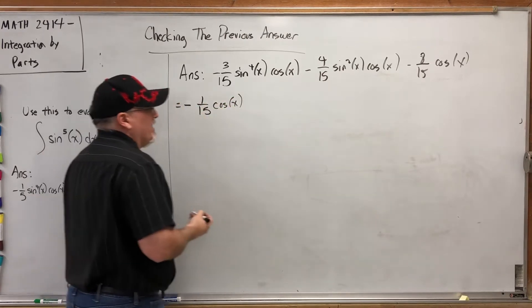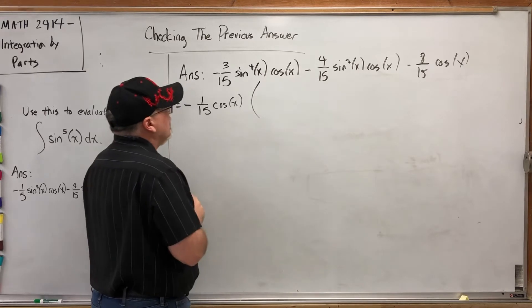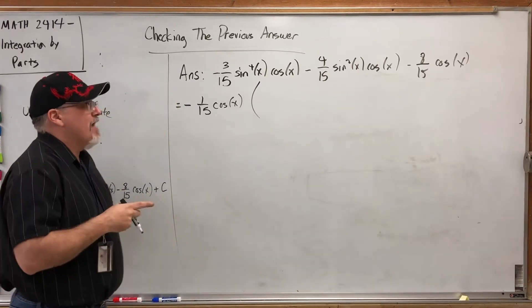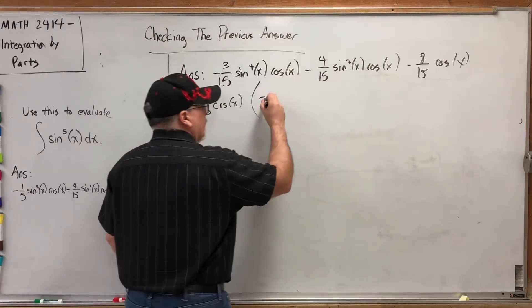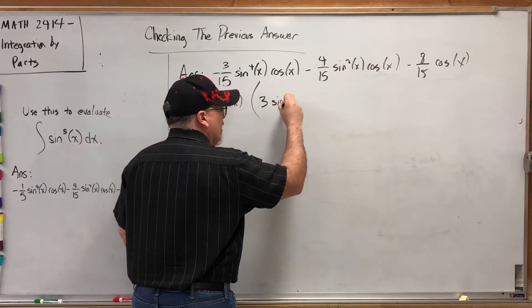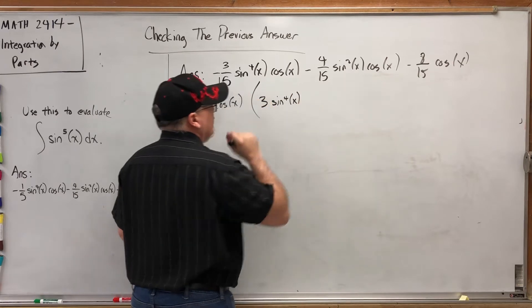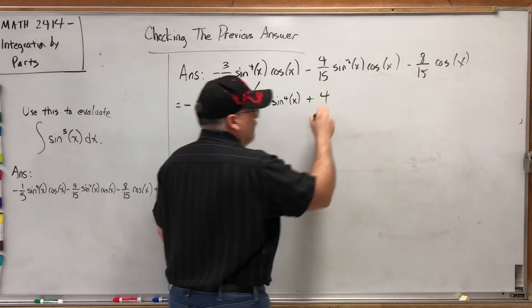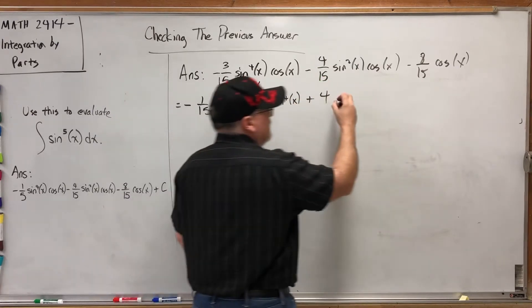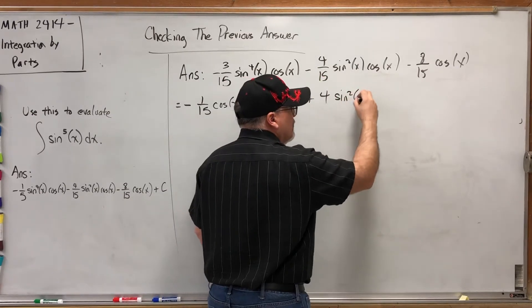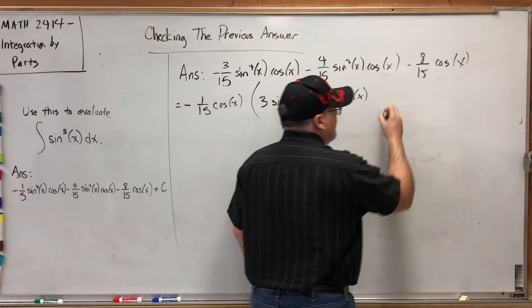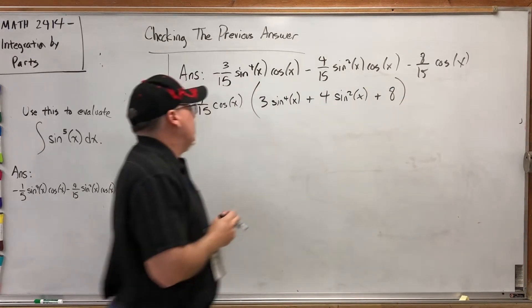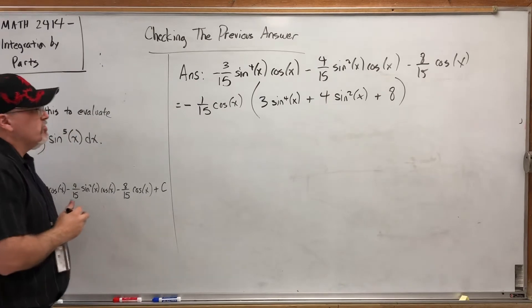Let's see what that equals. Everything becomes positive, everybody loses their denominator, everybody loses their cosine, so we're left with three sine to the fourth power of X plus four sine squared of X plus eight. Okay, so our answer is equal to that.